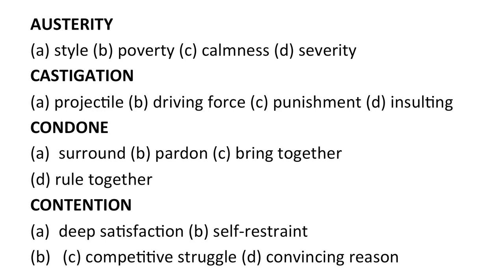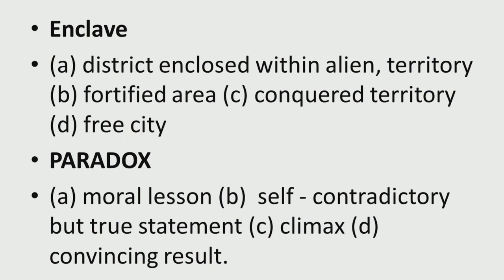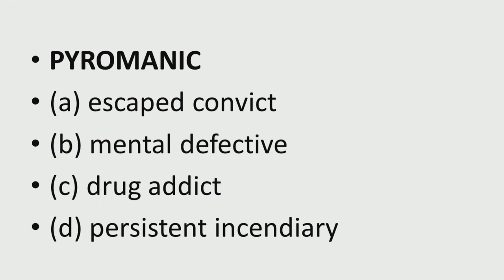'Contention' — choices: deep satisfaction, self-restraint, competitive struggle, convincing reason. 'Decry' — choices: denounce, catch sight of, weep, spy on. 'Defalcation' — choices: desertion, embezzlement, emigration, branching off. 'Demure' — choices: to be coy, grumble, object, to remove. 'Denizen' — choices: agent, police, underworld, inhabitant. 'Enclave' — choices: district, enclosed within alien territory, fortified area, conquered territory, free city. 'Paradox' — choices: moral lesson, self-contradictory but true statement, climax, convincing result. 'Pyromaniac' — choices: escaped convict, mental defective, drug addict, persistent incendiary.